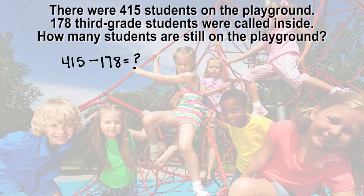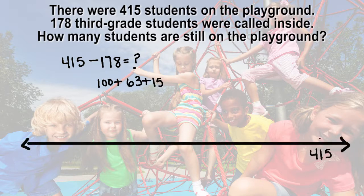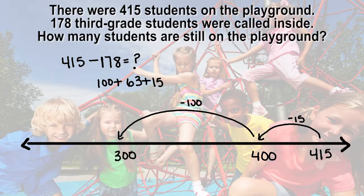One way to solve would be to decompose the 178 into 100 plus 63 plus 15. Start by subtracting 15 to land at 400. Then subtract 100 to land at 300. And then jump back or subtract the 63 to land at 237.